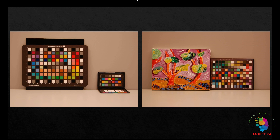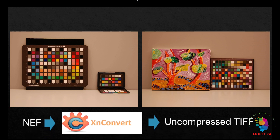The camera outputs two types of images: JPEG and NEF, which is a raw image format typically provided by Nikon digital cameras. Because it is important to access the original data captured by the camera with no changes, this raw format is used for this research. After extracting the raw image, it was converted to an uncompressed TIFF file using XnConvert software.